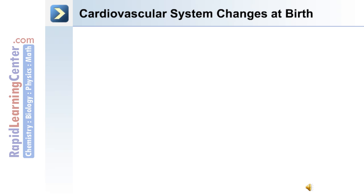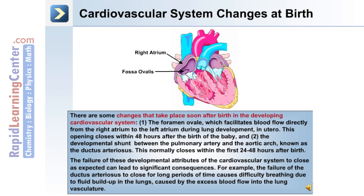Changes in the cardiovascular system that occur after birth include the closure of the foramen ovale, which facilitates blood flow directly from the right atrium to the left atrium during lung development in utero; this opening closes within 48 hours after birth. The second change is that the ductus arteriosus, the developmental shunt between the pulmonary artery and the aortic arch, closes normally within the first 24 to 48 hours after birth. Failure of these structures to close can lead to significant consequences; for example, failure of the ductus arteriosus to close causes difficulty breathing due to fluid buildup in the lungs from excess blood flow into the lung vasculature.